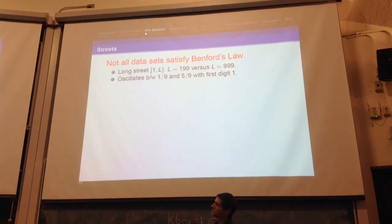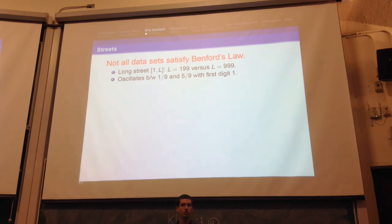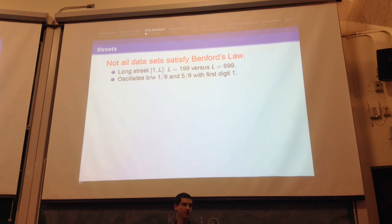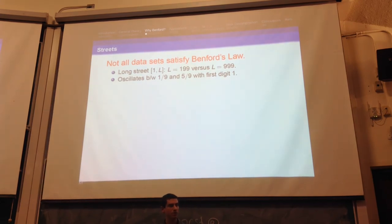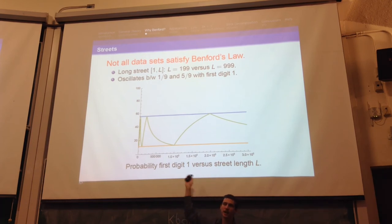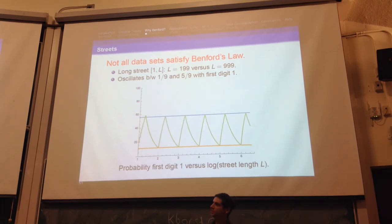Not all data sets satisfy Benford's Law. Consider a street where houses are numbered 1 through L. Depending on how long your street is, that profoundly affects what percent have a first digit of 1. If L is about 200, 2,000, or 20,000, you've just had a long stretch of 1s and expect about 5/9 of leading digits to be 1. If L is about 1,000 or 10,000, you've just had a long stretch of non-1s and expect closer to 1/9. Plotting this versus street length, you see oscillation — this is the wrong way to look at the data. I should look at the log of the street length, which gives a much better distribution.